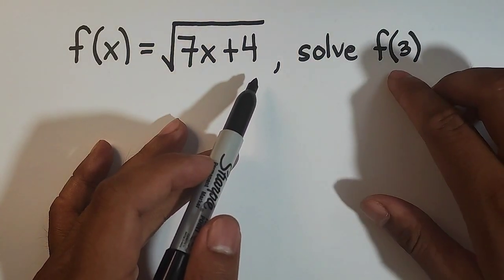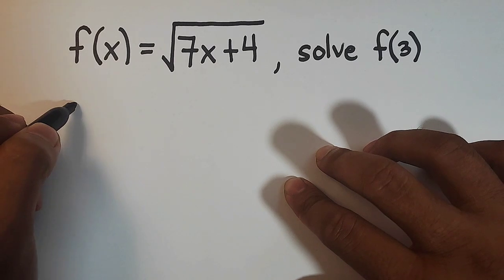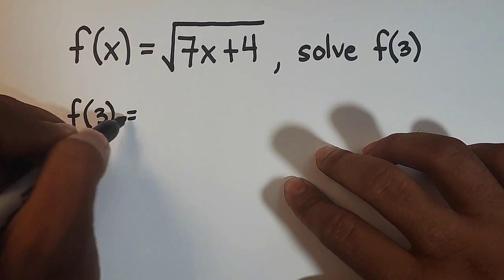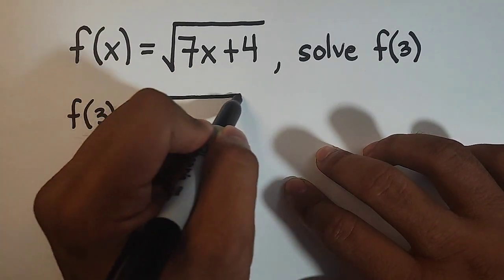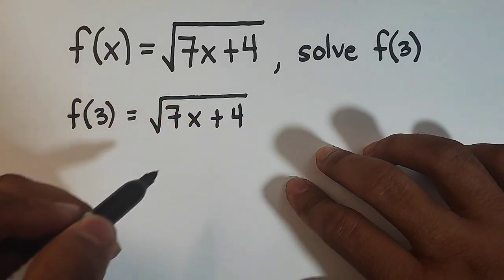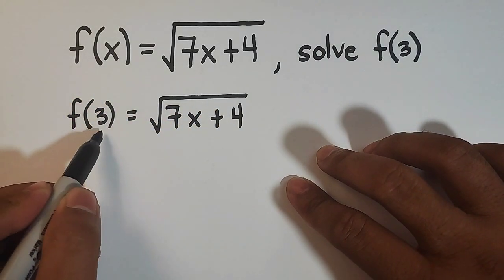First thing you need to do is to copy this f of 3, and copy this part of the function, the square root of 7x plus 4.